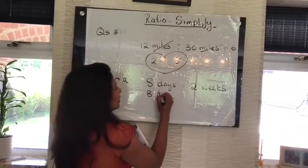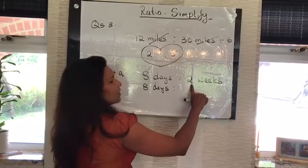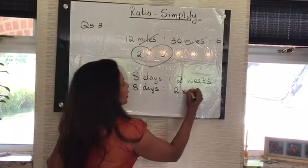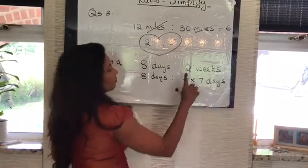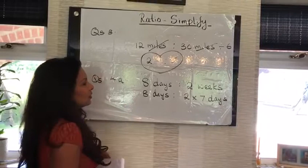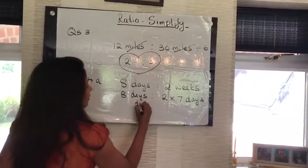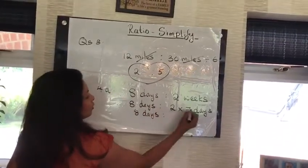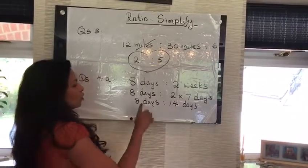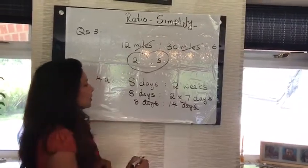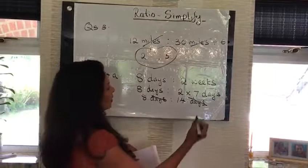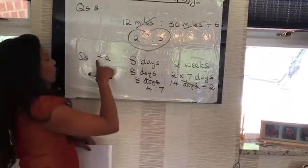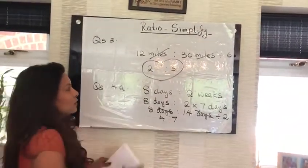So, 8 days stays as the same. How many days in 1 week? I have 7 days in 1 week. That means times by 7 days. This is 2 weeks times by 7 days. Now, I have both sides, days and days. This is 8 as usual. 7 times 2 is 14. So, now I can cancel days and days. 8 and 14, the common number is, I can divide both by 2. 2 times 4, 2 times 7. So, question number 4a is 4 to 7.